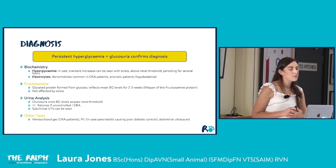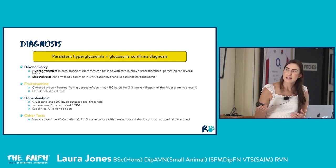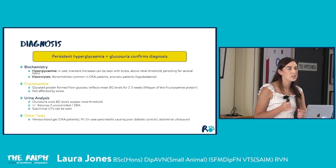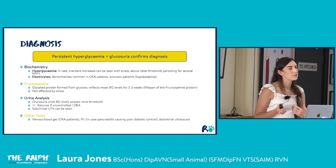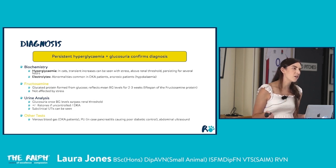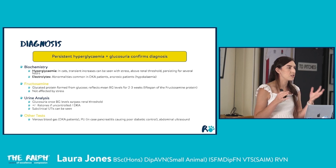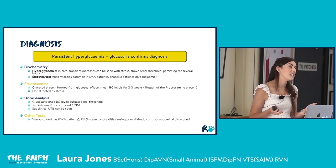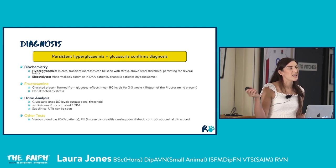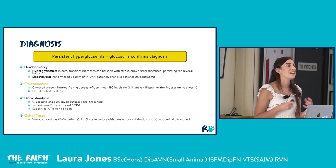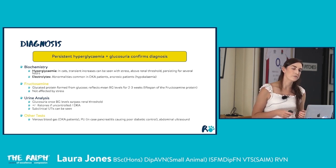Other tests include blood gas analysis, especially if concerned about DKA; PLI to look for underlying pancreatitis contributing to diabetes or making stabilisation harder; and abdominal ultrasound to examine the pancreas directly.